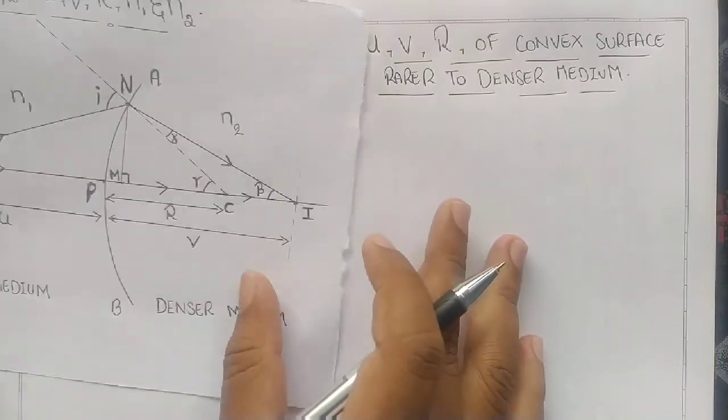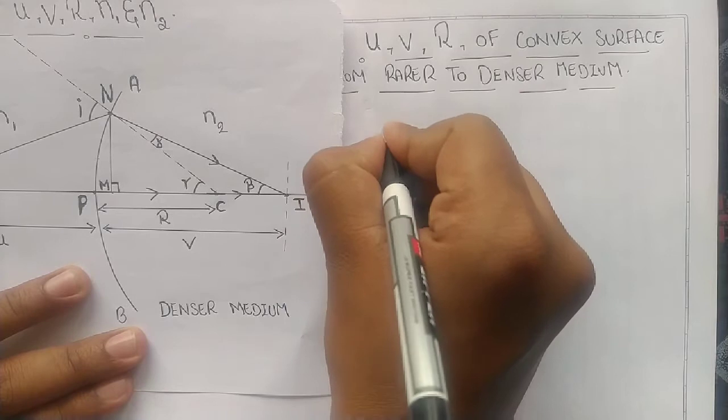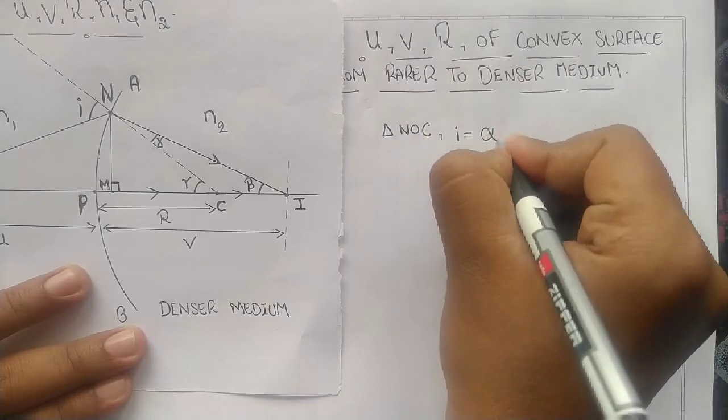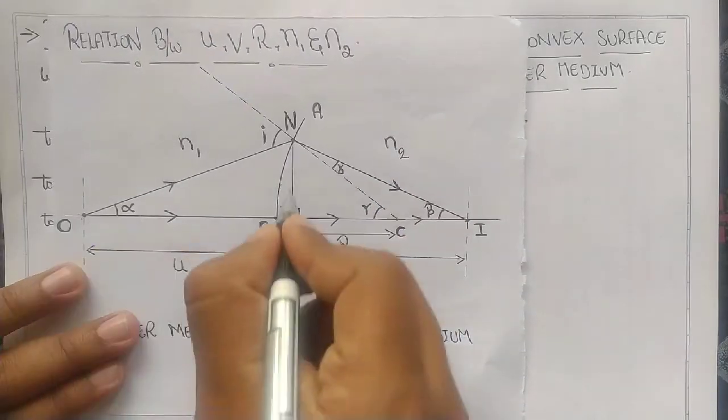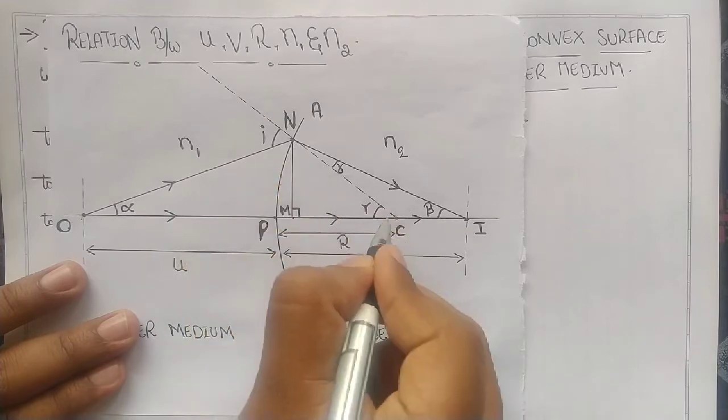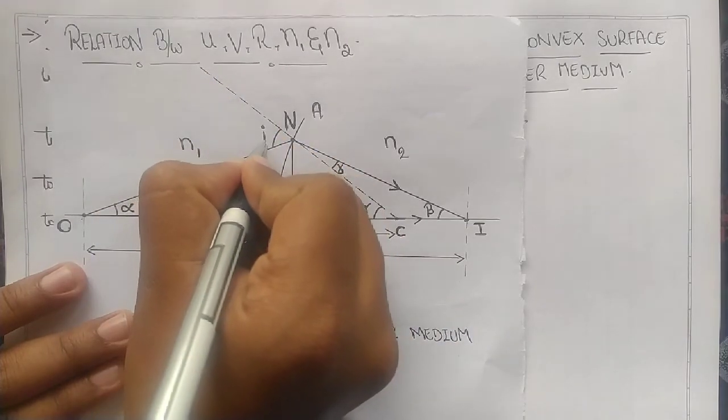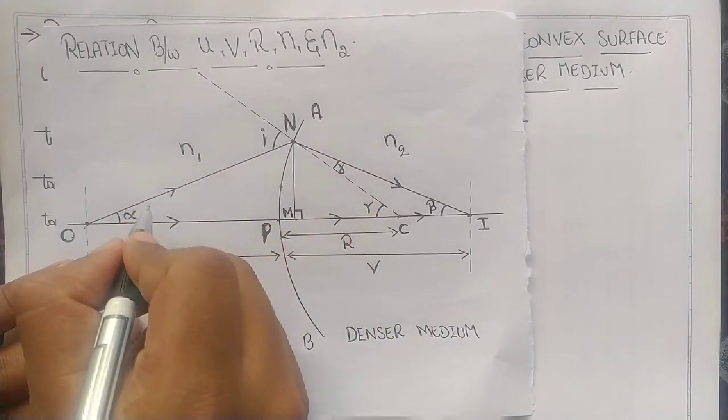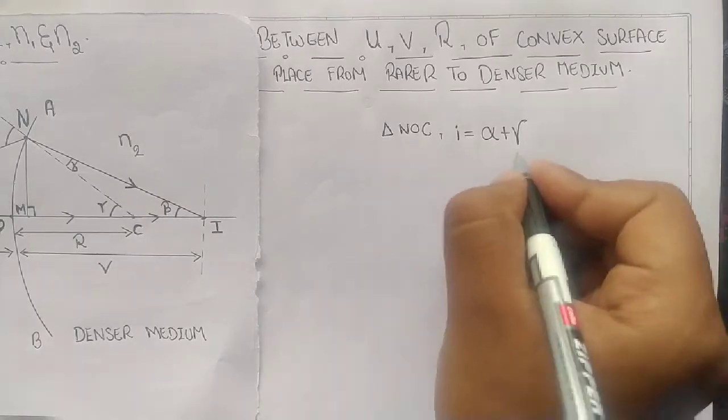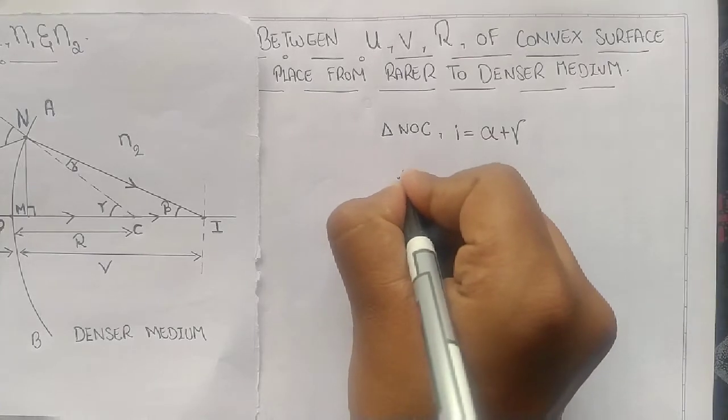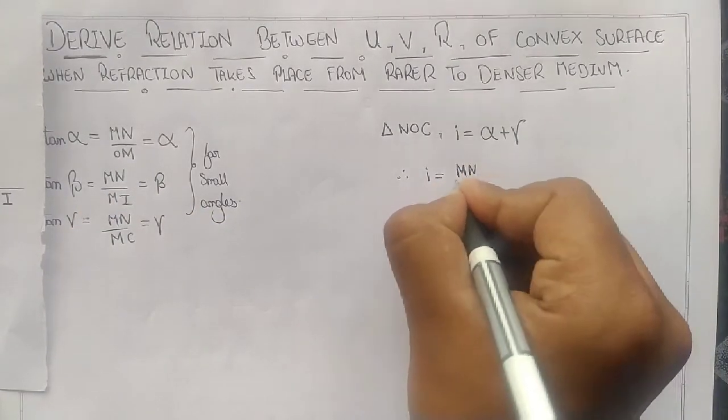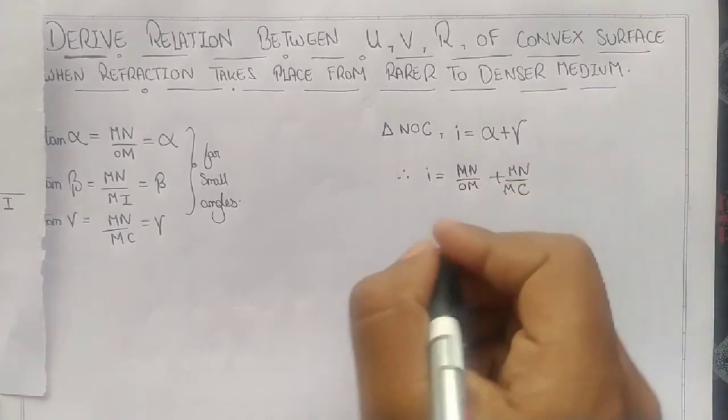Our second step is in triangle NOC. I is the exterior angle, so I equals alpha plus gamma. We have extended NC line, so I is our exterior angle equal to sum of other interior angles alpha and gamma. Therefore, I equals what is alpha? MN by OM plus MN by MC.